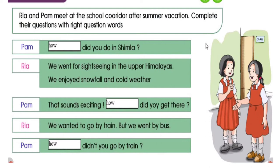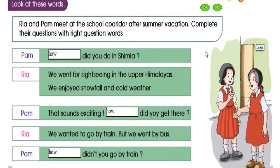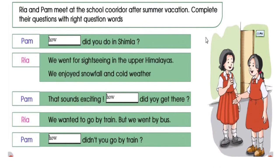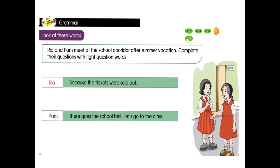The next question: it's not 'how,' write 'why' — W-H-Y. Why didn't you go by the train? She is asking. Here you should write W-H-Y. Because the tickets were sold out, Rhea is saying. So we did not go by the train, but we went by the bus.